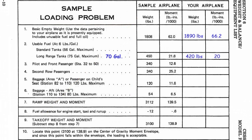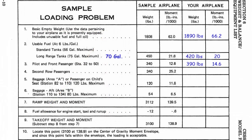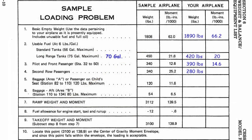Next, we add the weight of the pilot and co-pilot. I'm flying with a co-pilot and together we weigh 390 pounds. Going back to the loading graph, we find the pilot and co-pilot line, follow 390 pounds until it hits the line, then go down — that gives us a moment of 14.6. Next is the second row of passengers. We have two passengers who together weigh 280 pounds. On the loading graph, we find the second row passenger line, follow 280 pounds to the line, go down — that gives a moment of 20.5. So we put 20.5 as the moment for second row passengers.